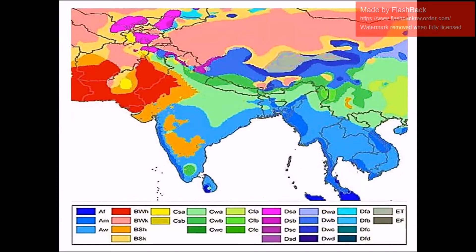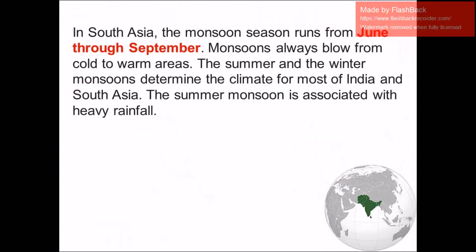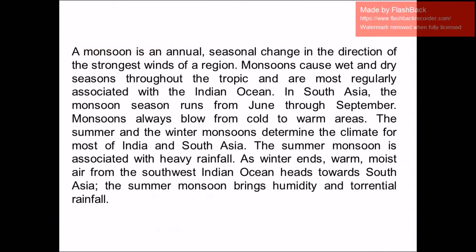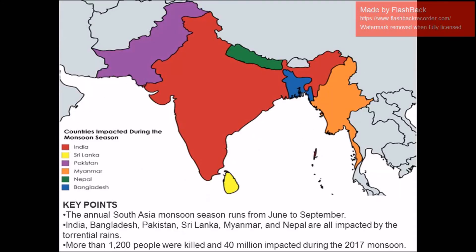This map shows the Köppen climate classifications for South Asia — it is a very colorful map. In South Asia, the monsoon season runs from June through September. Monsoon winds always blow from cold to warm areas. The summer and winter monsoons determine the climate for most of India and South Asia. This map also shows the countries impacted during the monsoon seasons, with key points shown below.